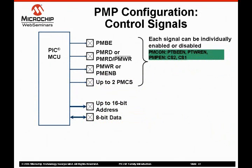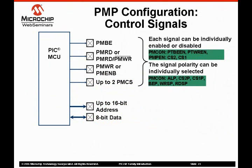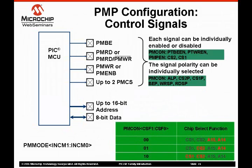Each and every control signal of the PMP can be individually enabled or disabled using bits in the PMCON and PMENable registers. The control signal polarity can also be individually configured through additional bits in the PMCON register. CS1 and CS2 can be configured either as chip select signals or address pins, by configuring the CSF1 and CSF2 bits in the PM control register. The table below shows the pin function with respect to the CSF bits. The ability to disable control lines and select signal polarity was implemented to reduce external circuitry and conserve pins.